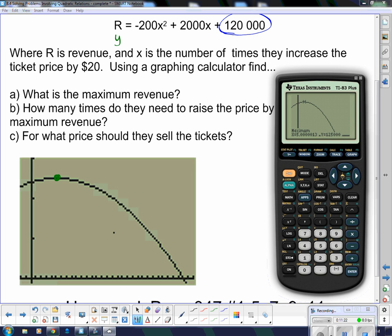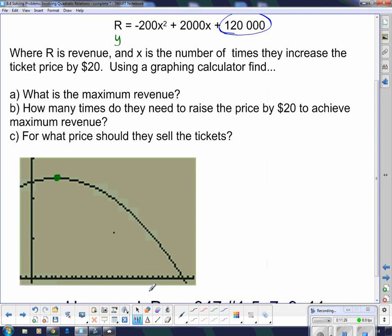It says that the maximum is at 5, 125,000. So, this point here is the point 5, 125,000. So, the maximum revenue, revenue was my x-axis. So, the maximum revenue is $125,000.